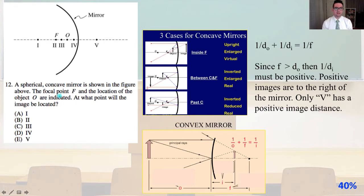Number 12, a spherical concave mirror is shown in the figure above. The focal point F and the location of the object O are indicated. At what point will the image be located? 1 over DO plus 1 over DI equals 1 over F. Since F is greater than DO, then 1 over DI must be positive. Positive images are to the right of the mirror. Only V, Roman numeral number 5, has a positive image distance. Therefore, it must be answer E.